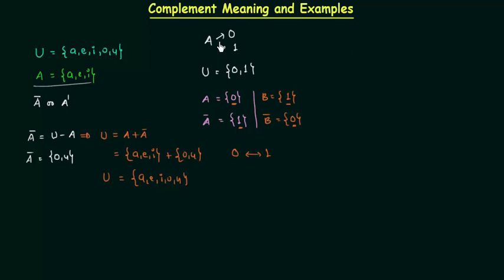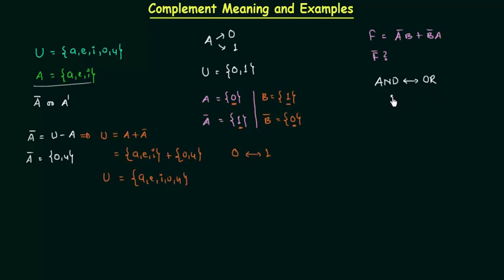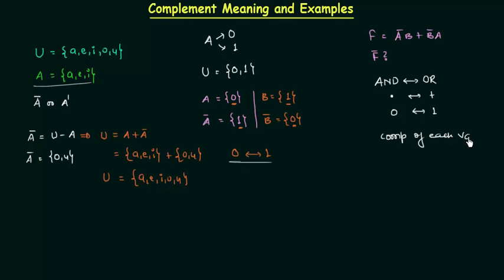Now we will try to find out the complement of functions. The function f is equal to A-complement·B + B-complement·A. We want to find f-complement. We have already studied De Morgan's law and we are going to use it. In De Morgan's law we exchange AND with OR and OR with AND — AND is represented by dot, OR by plus — 0 is exchanged with 1 and 1 with 0, and we take the complement of each variable.